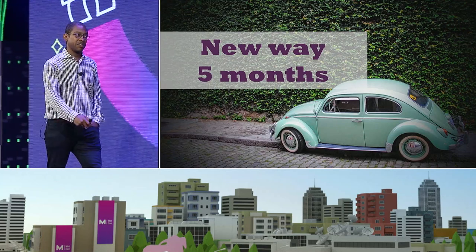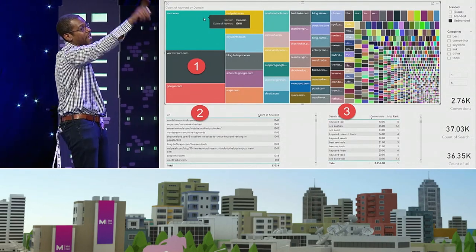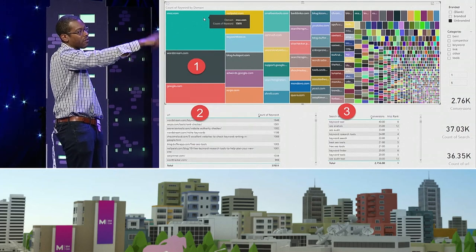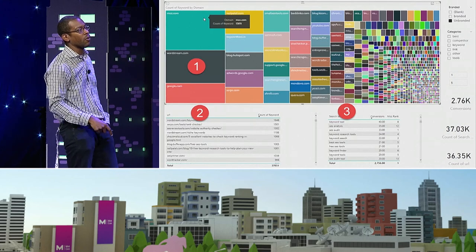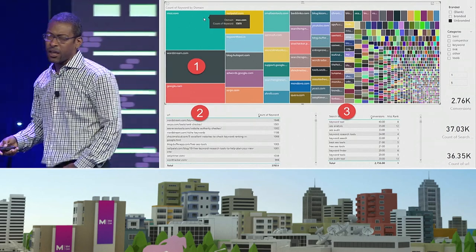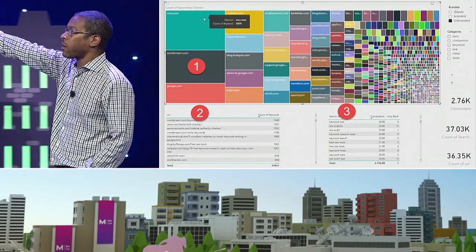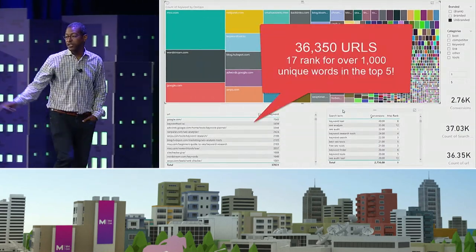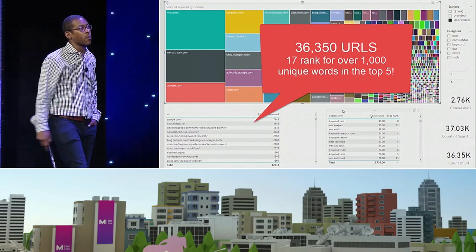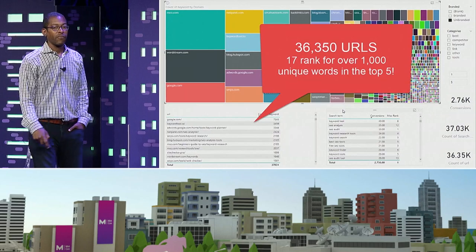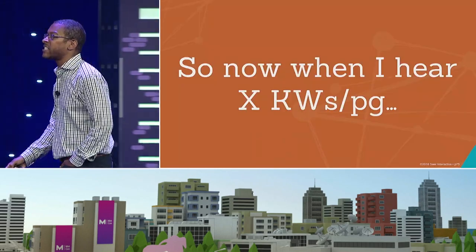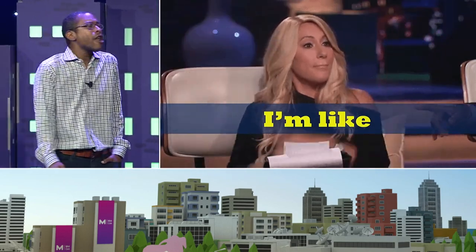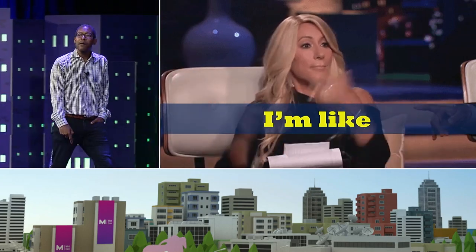I've got my box of all the competitor domains — all their 200-something thousand URLs — but I have a filter so it's only top-five rankings, which brings it down to 37,000 URLs. Out of all those URLs, 17 rank for over 1,000 unique words in the top five alone. So what do you think I look like when somebody says, 'I think we should do about 10 keywords per page'? Where did that come from? 'I read it on Search Engine Land.' Pull your own data and come up with your own best practices.